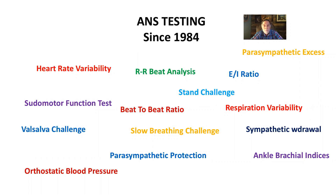As you've seen on previous webinars, the autonomic nervous system — consisting of the parasympathetic and sympathetic nerves, the two major branches, with one other called the enteric — affects every organ system. So it makes sense to test this, and the reimbursement keeps increasing on the testing at the same time.